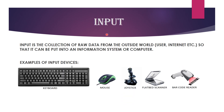Now let us start with the first event: input. Input is the collection of raw data from the outside world so that it can be put into an information system or computer. The input can come from a user or from the internet to the computer. Some examples of input devices are keyboard, mouse, joystick, scanner, barcode reader, etc.